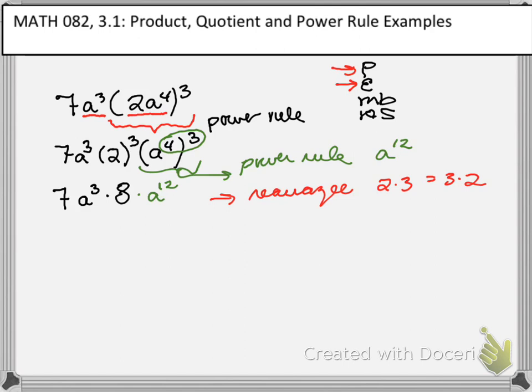You learned that probably back in elementary school when you were memorizing your times tables. So I'm going to use that property to rearrange these values. I'm going to place my numbers, the 7 and the 8, next to each other. And then I'm going to place the variables next to each other as well. This is useful because I can see that 7 times 8 is 56.